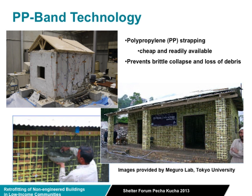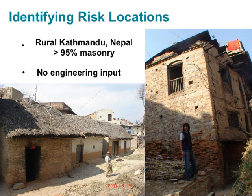One example I'm talking about is PP band technology. I'm not particularly advocating the two technologies I'm discussing today, but giving them as examples. This particular one is an IKEA flat-pack strap which you use to wrap around the wall, internal and external, preventing separation of walls.